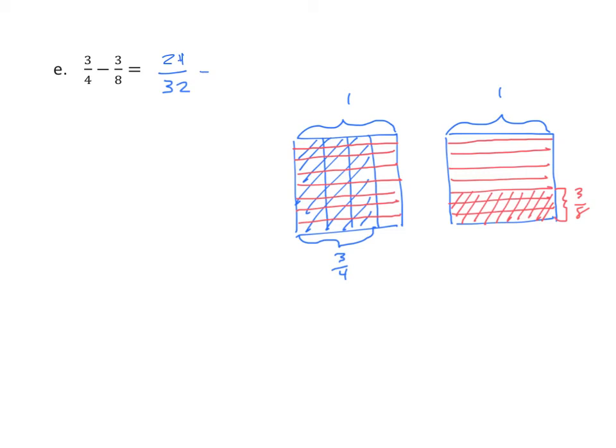All right, so now we need to go on to our second part. We're going to partition my subtrahend into four equal parts using my lines going vertical. Again, my denominator is thirty-two. How many out of thirty-two? Let's count. One, two, three. One, two, three, four. Three times four is twelve.